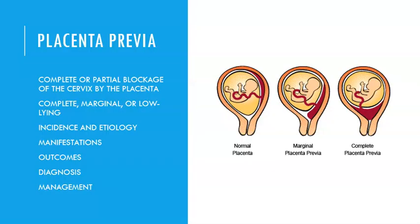Placenta previa and placental abruption are two very different things with potentially very different outcomes. Placenta previa is simply a low-lying placenta. It can be partial or marginal — close to the cervix but not covering it — or complete, where it entirely covers the cervical os and there is no way for baby to come out that way. Placenta previa is painless, which is one of the major differentiating factors from placental abruption. Women usually come to the ER or their OB with vaginal bleeding, and on ultrasound the low-lying placement of the placenta is seen and diagnosed.